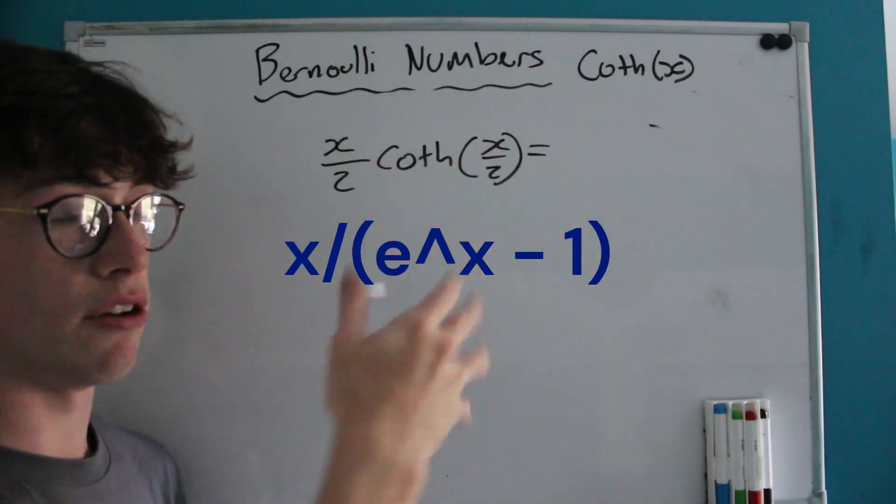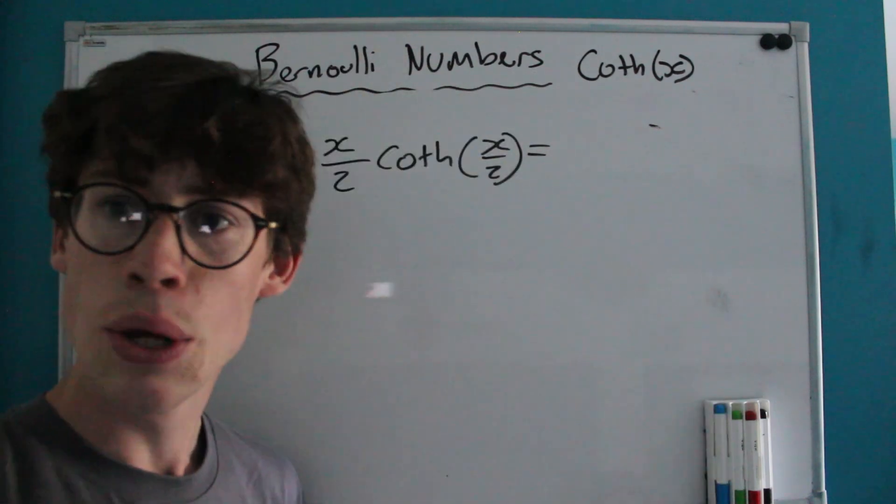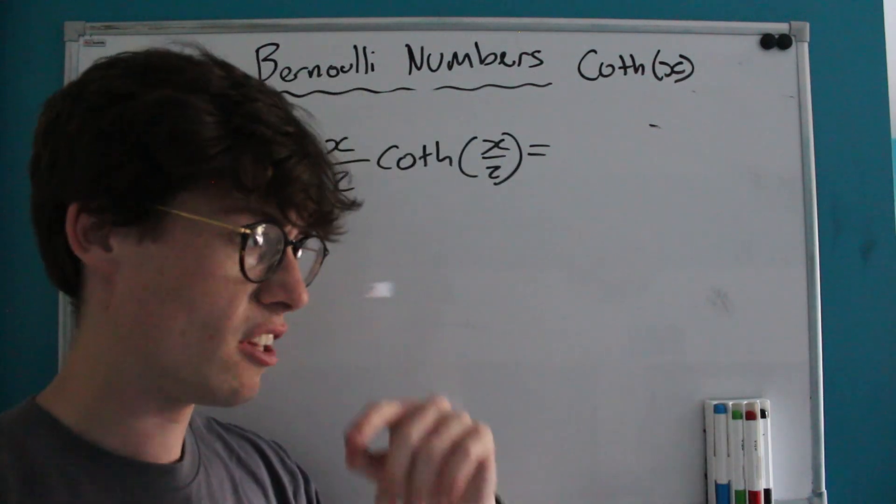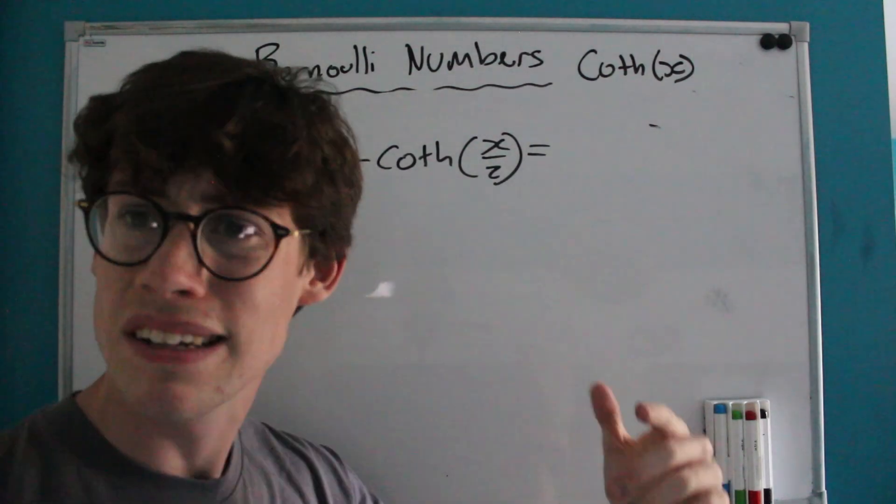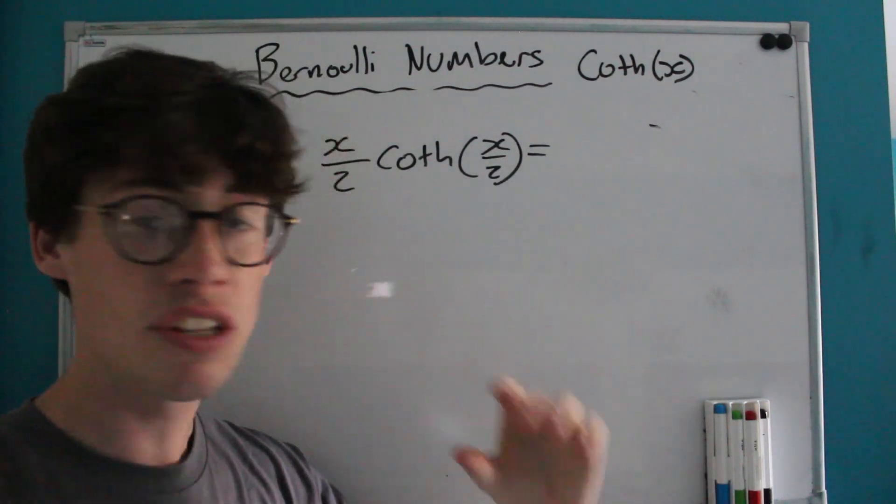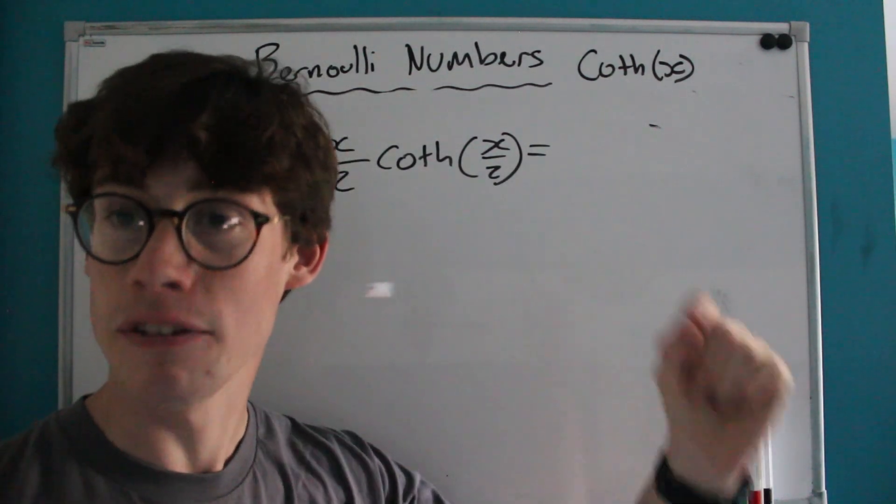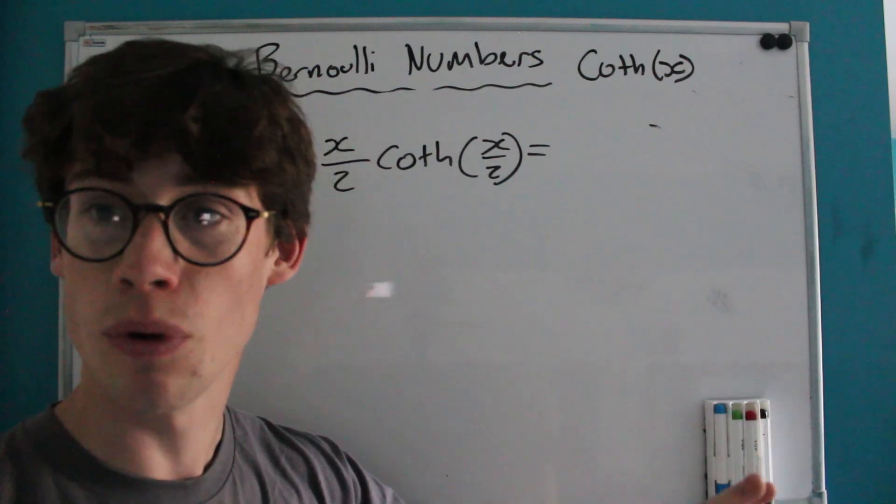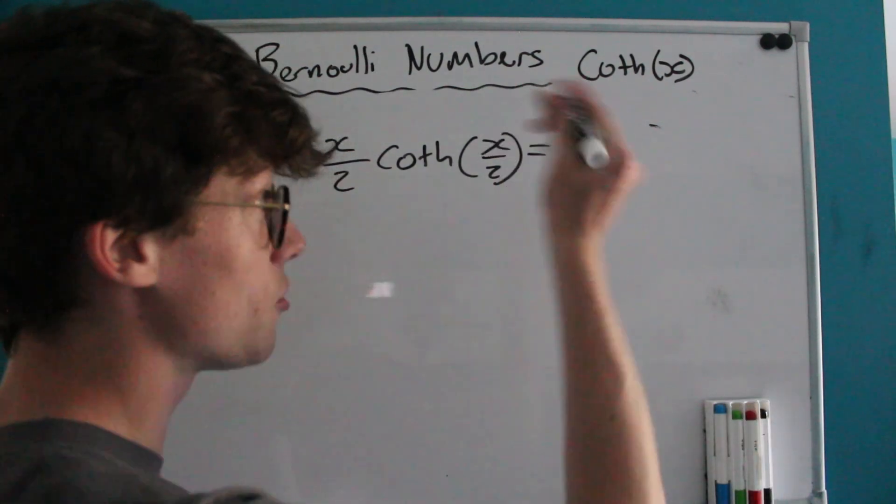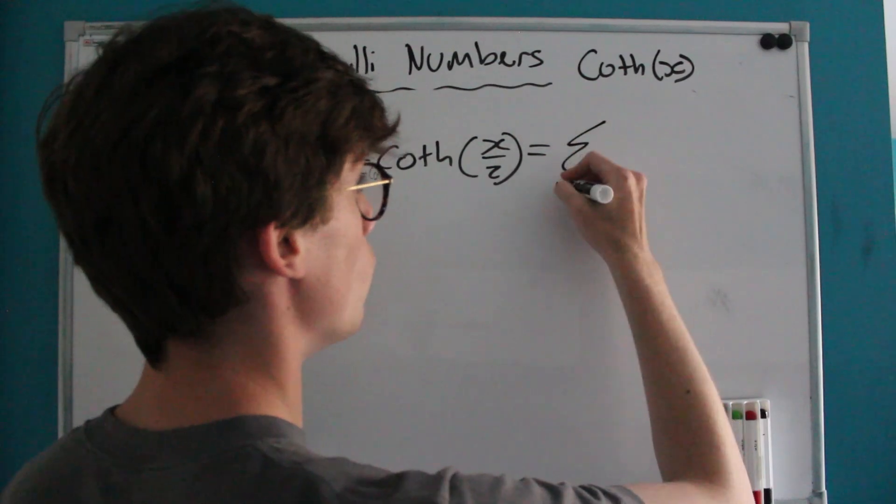must be equal to the McLaren series of X over e^X, which we know is just b_n over n factorial times X^n, but excluding all odd Bernoulli numbers because we've subtracted out that b_1. So we're literally just having b_0, b_2, b_4, b_6, b_8 with no odd ones in between.